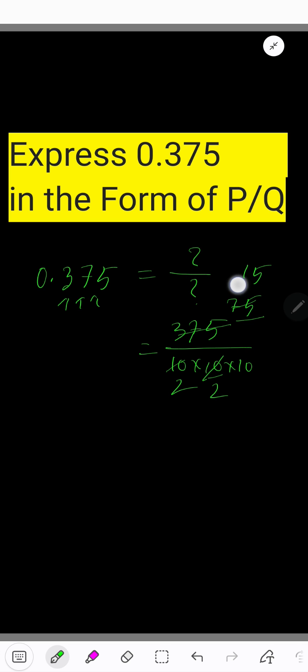That is 15. Again, this 15 is divisible by 5. If you divide this 15 by 5, you will get 3. And if you divide this 10 by 5, you will get 2. So basically, in the numerator we are getting 3, and in the denominator we are getting 2 times 2 times 2.